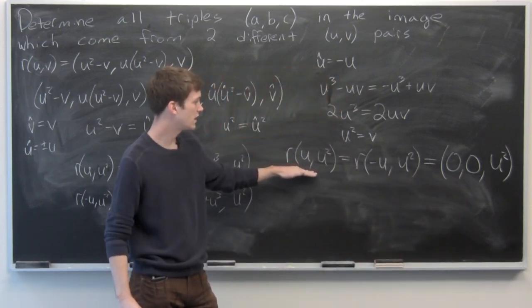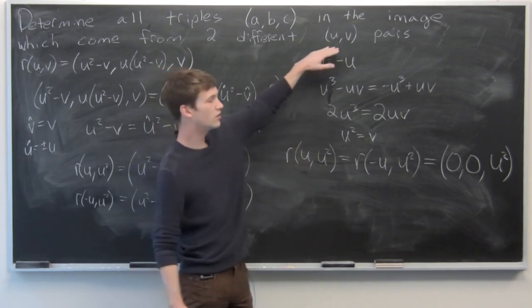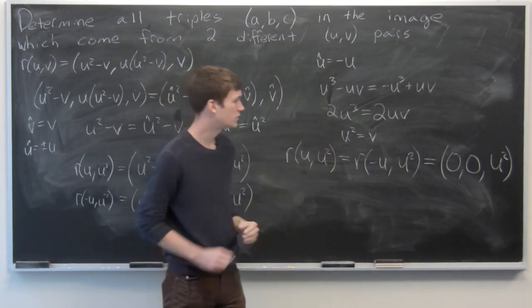And the points that are going to give us that, or the different u-v pairs, are going to be plus or minus u, comma, u-squared.